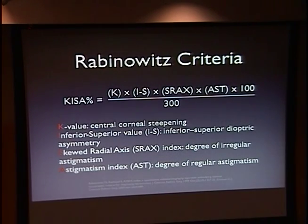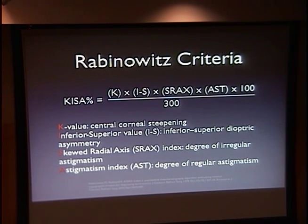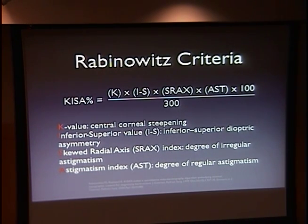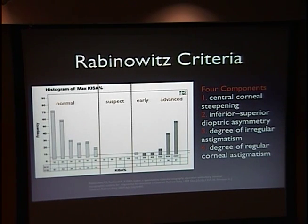How do you develop these numbers? This is known as the KISA number — an equation where the K value corresponds to central corneal steepening, the inferior-superior value is an interesting way of noting dioptric asymmetry, and then skewed radial axis and astigmatic index are derived from the video keratograph. You plug those numbers into this equation, and using 60 to 100% as sort of a mid-range, above 100% gives you almost a certain diagnosis of keratoconus.